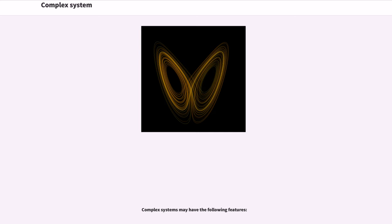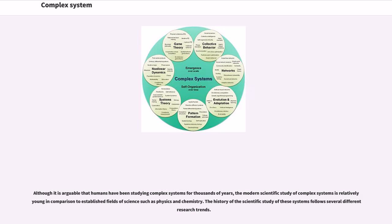Complex systems may have the following features. Although it is arguable that humans have been studying complex systems for thousands of years, the modern scientific study of complex systems is relatively young in comparison to established fields of science such as physics and chemistry.